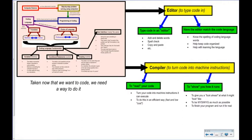We can add words, delete words, do a basic spell check, copy and paste — most editors can do those basic things. It could go as high as Microsoft Word, which can still do all that. But the editor would be nice if it could match the coding language. If I type computer code into Microsoft Word, a lot of it might show as a mistake because it doesn't know I'm writing code.